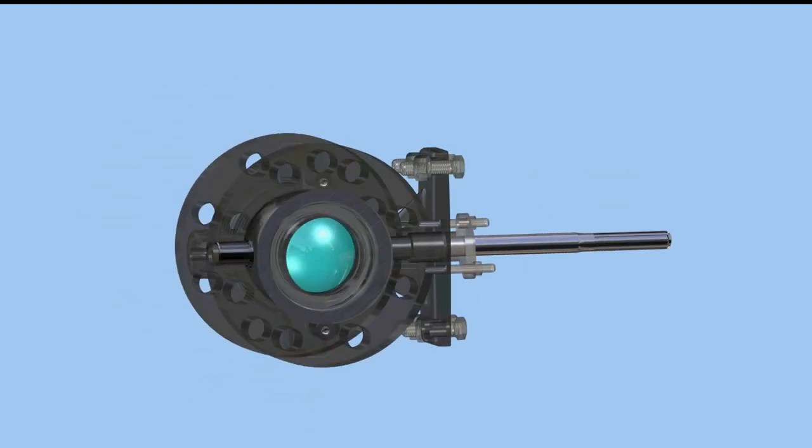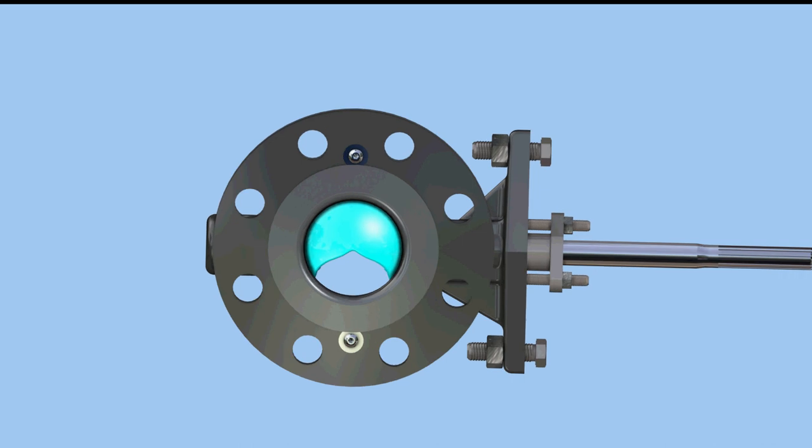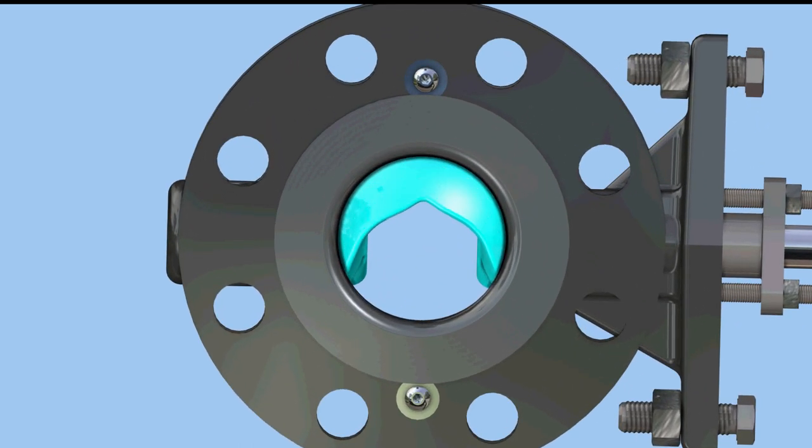As the drive shaft is rotated, the ball rotates to expose a flow path through the V notch. This V notch allows for a large flow range due to a small flow area at low travel and a large flow area at maximum travel.